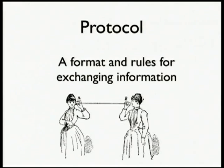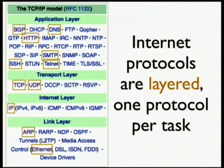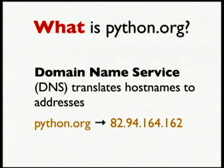We're going to talk about a lot of specific popular Internet protocols. A protocol is just a format and rules for exchanging information. On the Internet, protocols are layered — one protocol per task and they all work together to get useful work done. Our first question was: what is python.org? There's a protocol called the Domain Name Service, or DNS, whose whole job is to answer that question.